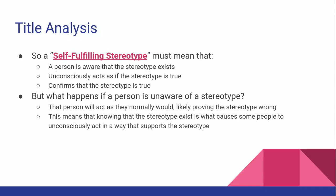So a self-fulfilling stereotype means that a person is aware that the stereotype exists, and because of that they unconsciously act as if that stereotype is true — and by doing that, they confirm for themselves that the stereotype must be true. But if a person is not aware that a stereotype exists, they would act as they normally would, unaffected by how the stereotype might make them feel, likely proving the stereotype wrong. So when a person is aware of a stereotype, it can cause them to unconsciously act in a way that supports it.